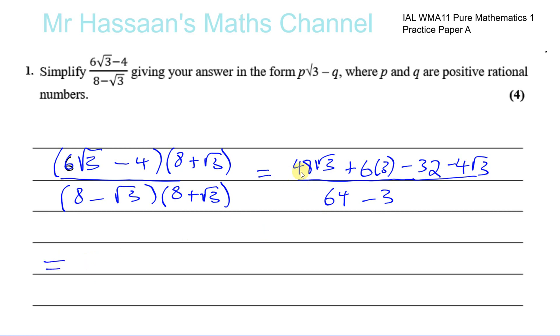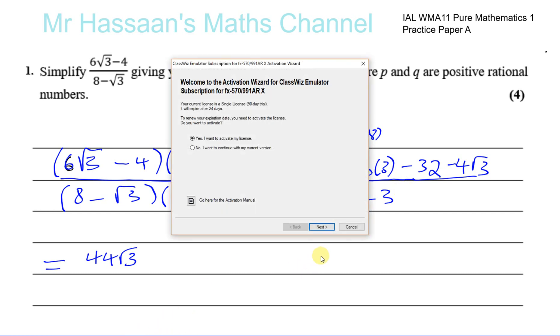So let's simplify this now. On the numerator we have 48 minus 4, which is 44, so we have 44 times √3. And we have 6 times 3 is 18, that's 18. 18 minus 32, let's make sure.